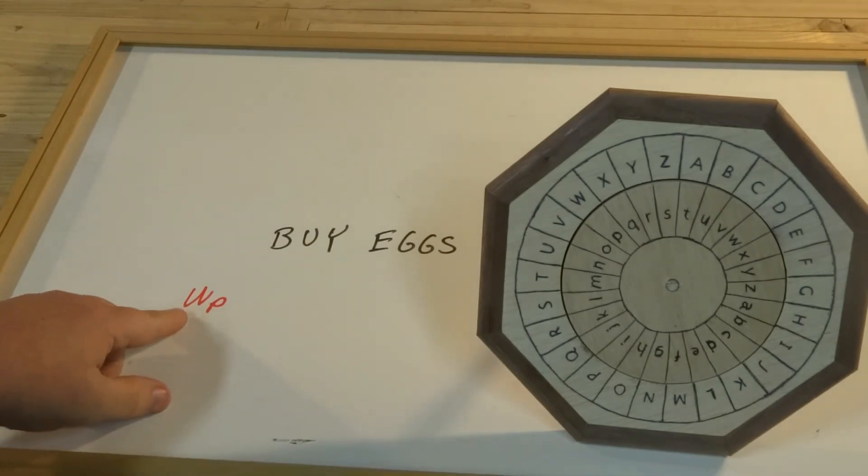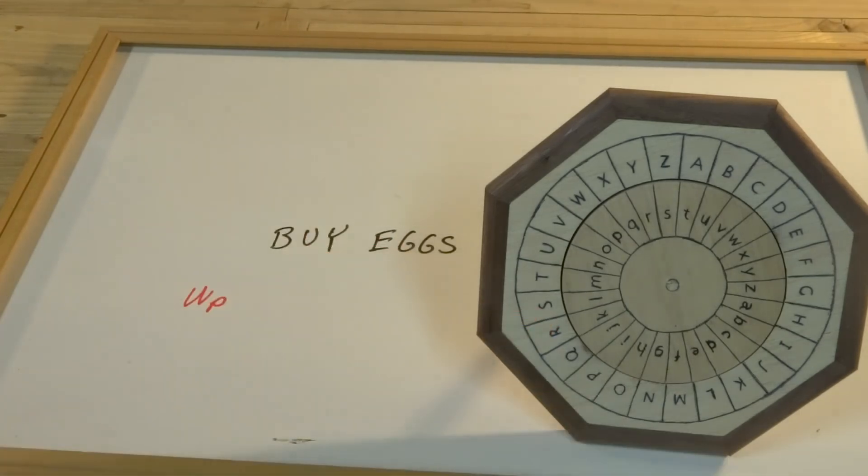And we want to make sure that we write down the capital W, the lowercase P, because that tells the recipient how to set their wheel in order to decode this.